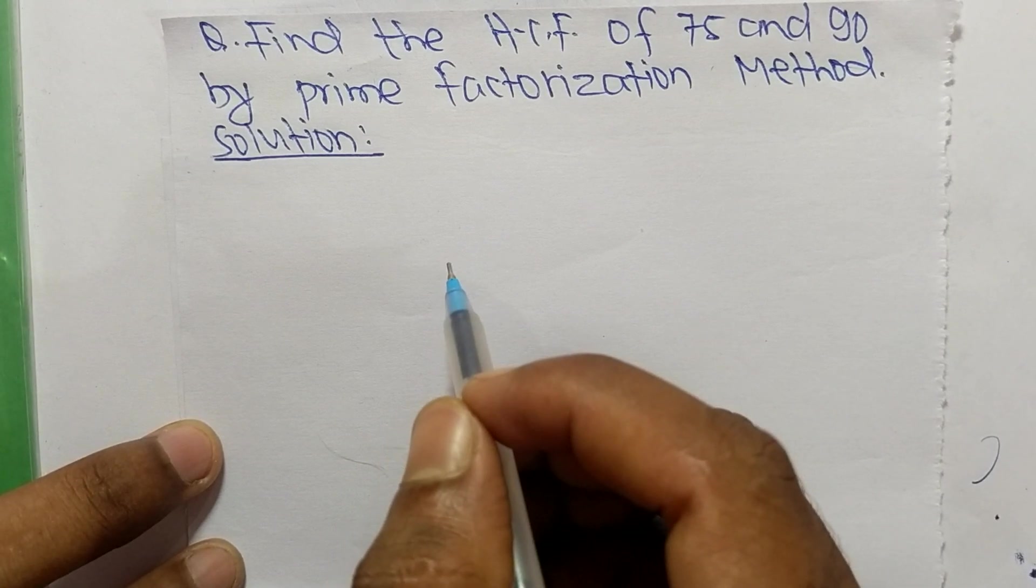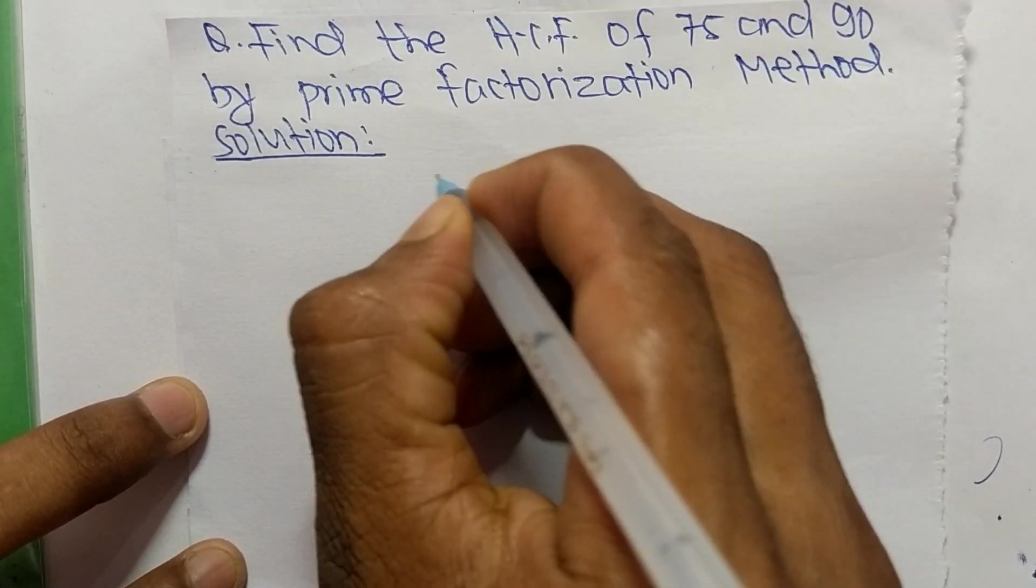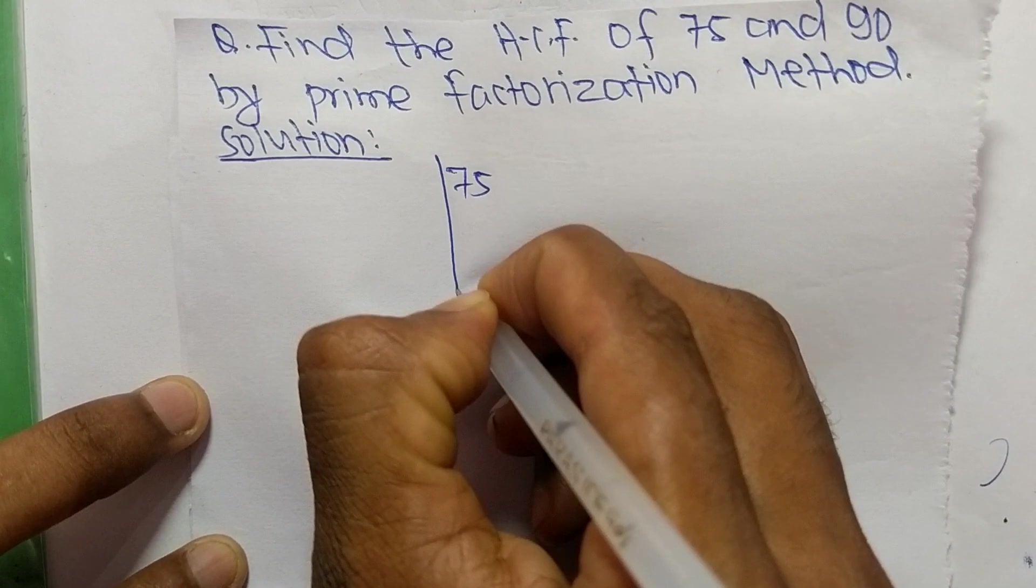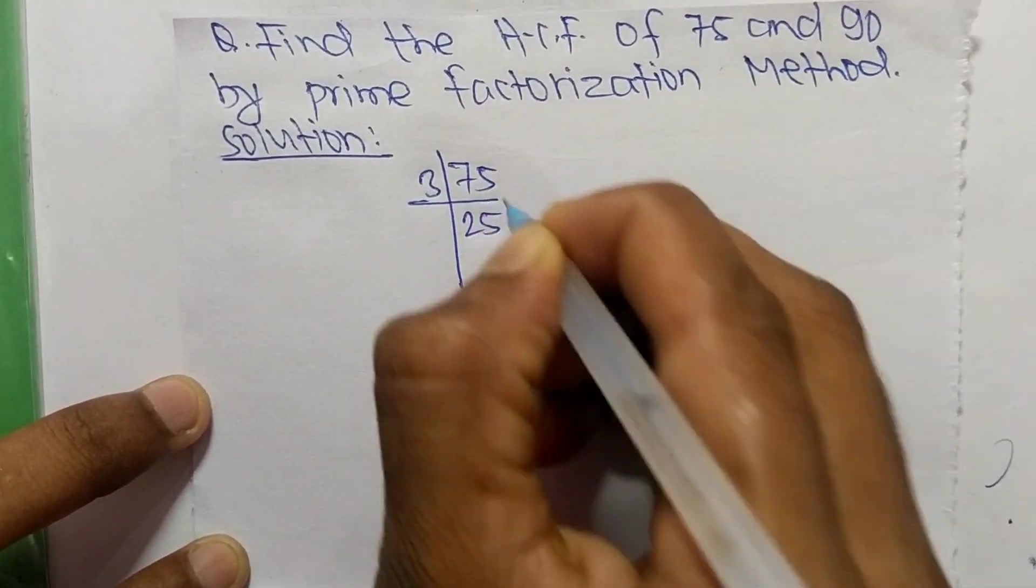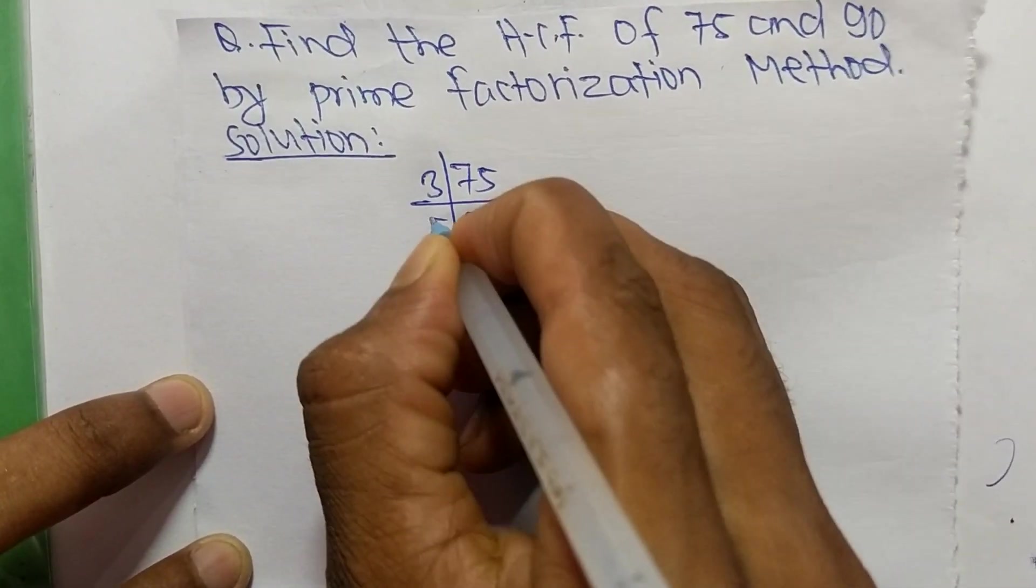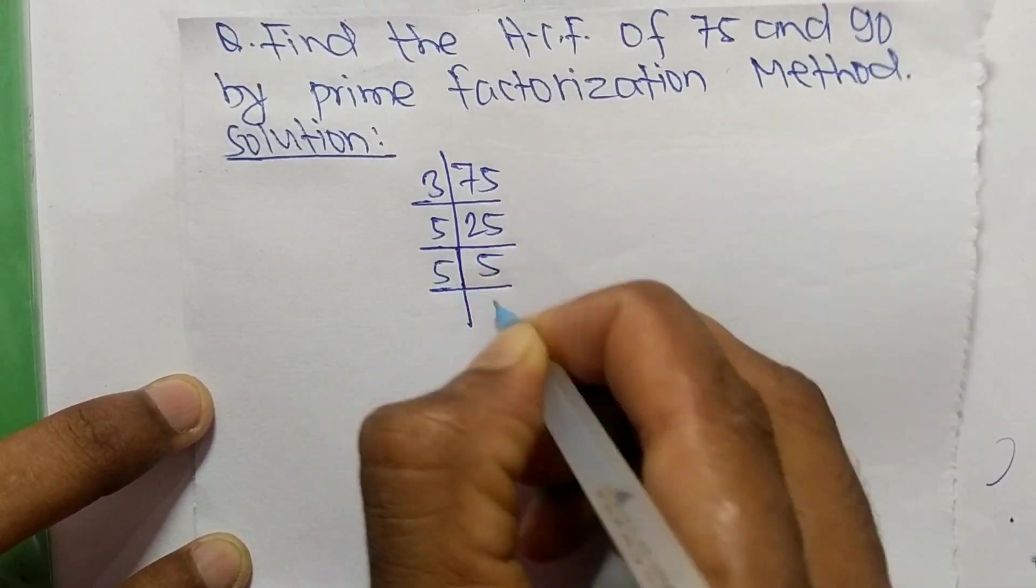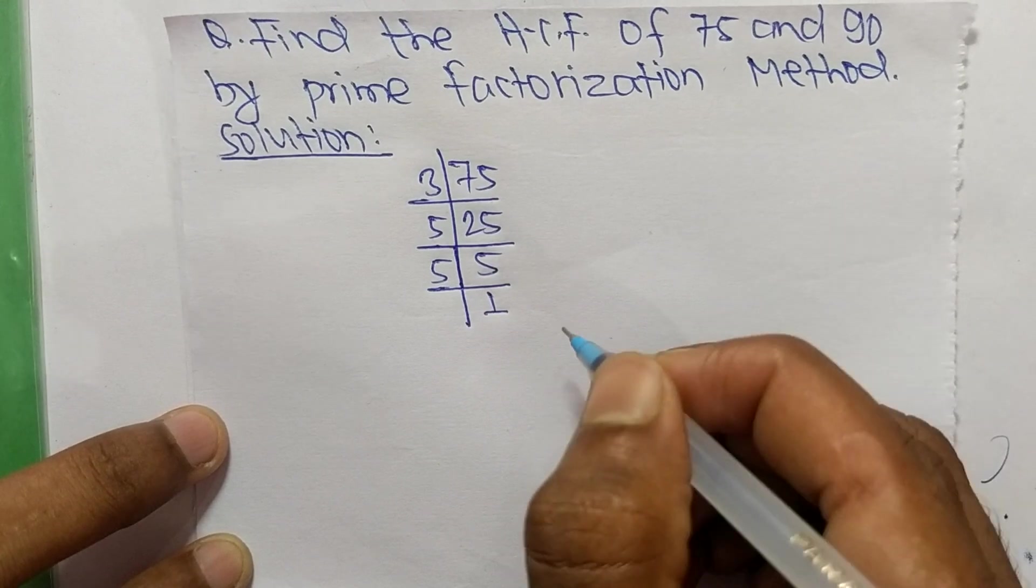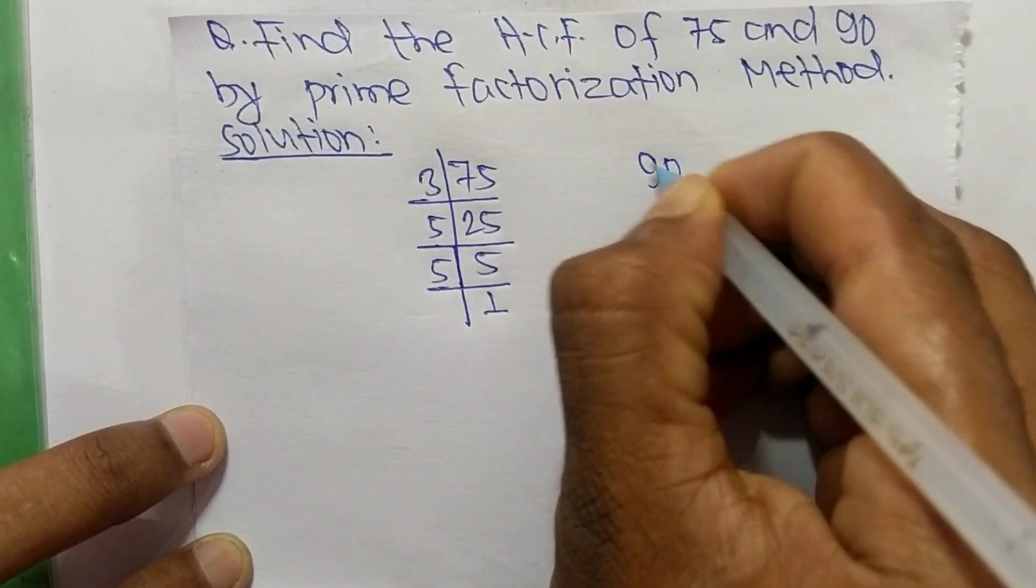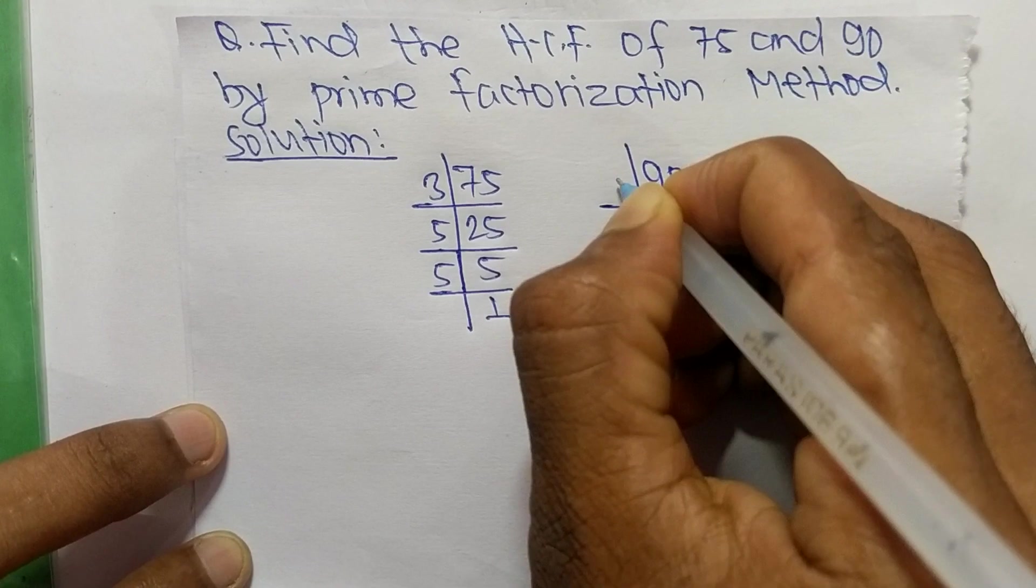So first we find out the prime factors of 75. It is 3 times 25 equals 75, 5 times 5 equals 25, and 5 times 1 equals 5. Like this, the prime factors of 90 are: 2 times 45 equals 90...